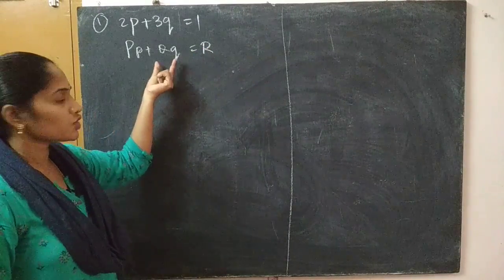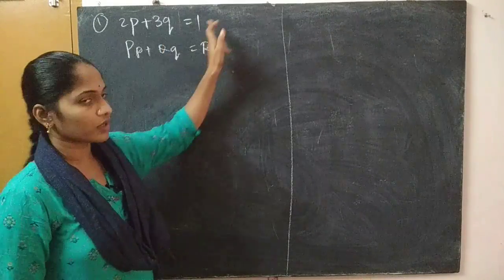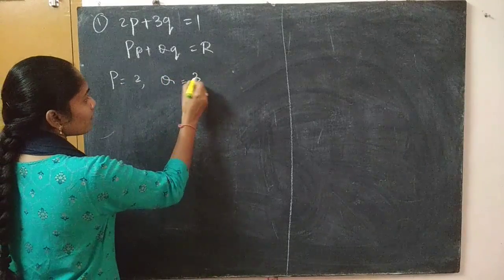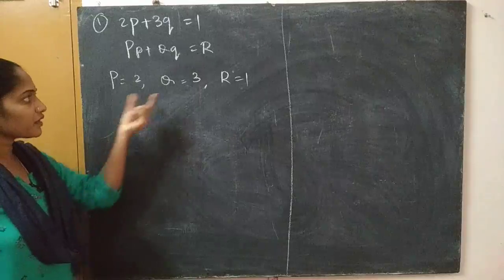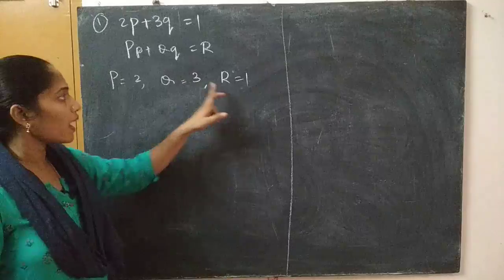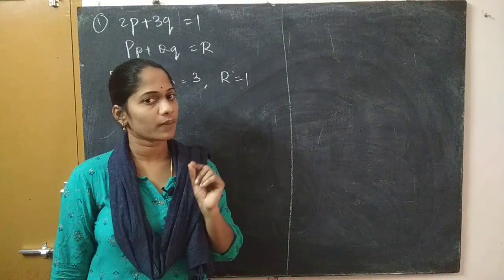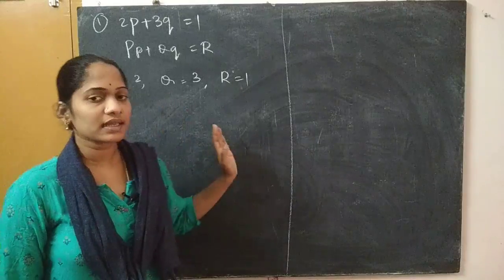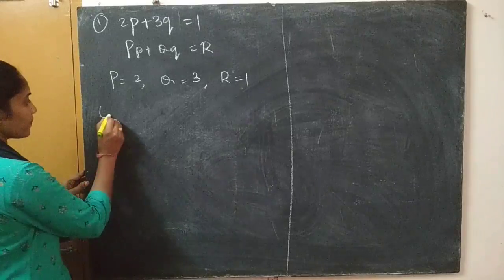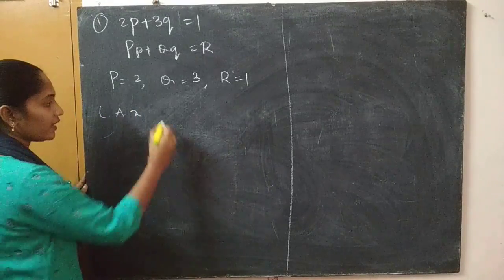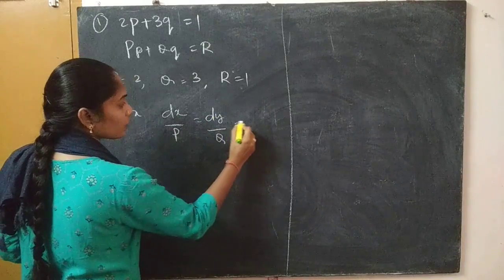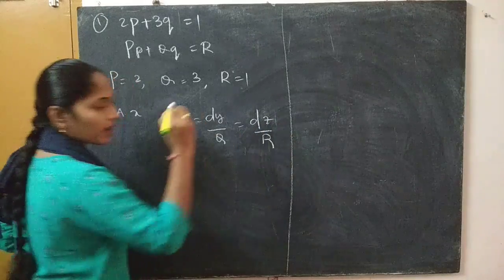After writing in quasi-linear form, compare to identify capital P, capital Q, and capital R. Here capital P equals 2, capital Q equals 3, and R equals 1. Remember that capital P, Q, R are functions of x, y, z. After comparing the coefficients, the next step is to write down Lagrange's auxiliary equation.